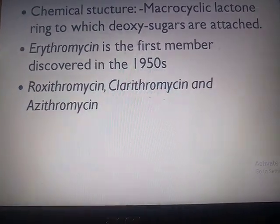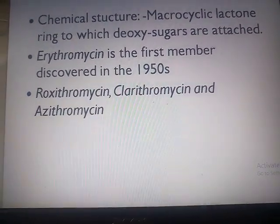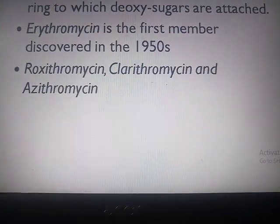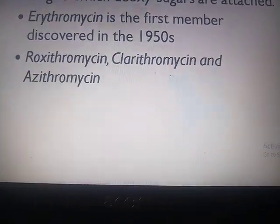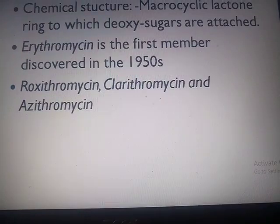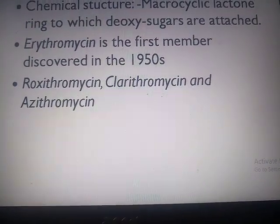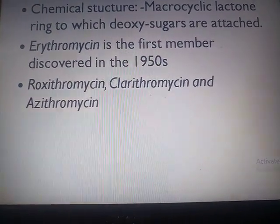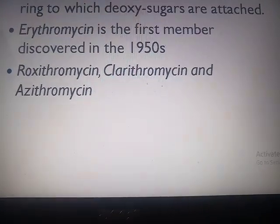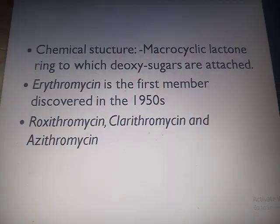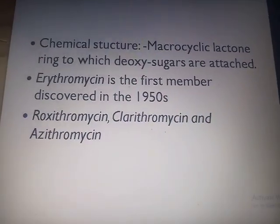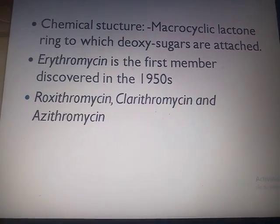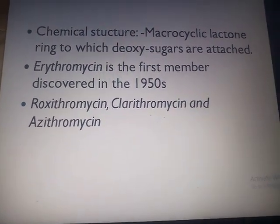Erythromycin was the first member discovered in the 1950s. There are only four macrolides: erythromycin, roxithromycin, clarithromycin, and azithromycin. Erythromycin is the prototype drug of macrolide, meaning it represents the whole class of drugs.